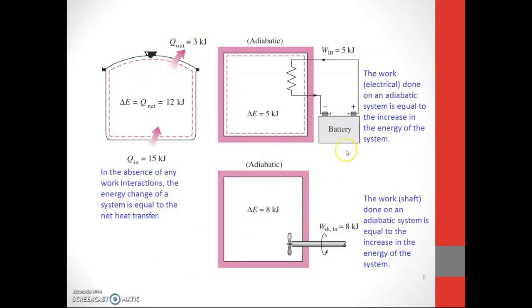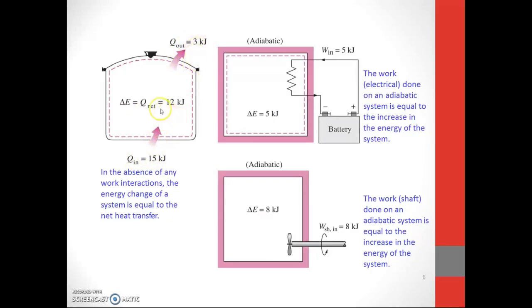Here are more examples of the first law of thermodynamics. In the absence of any work interactions, the energy change of the system equals the net heat transfer. When you supply Q in of 15 kilojoules, delta E equals Q net equals 12 kilojoules — because Q net equals Q in minus Q out, which is 15 minus 3, giving Q net equal to 12 kilojoules.